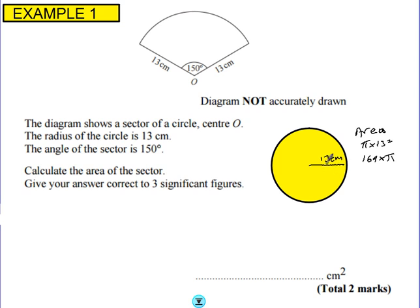Now that's what the area of this circle would be. Now what we've actually got is a fraction of that circle. Now the way that we work out the fraction is well there's 360 degrees in a full circle. So we've got the fraction of the full circle. So all I need to do is find that fraction of this amount. So the calculation we're going to be doing is 150 over 360 times by 169 times π. And on your calculator that will give you something like that.